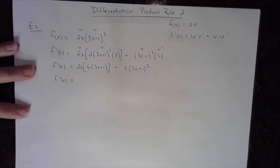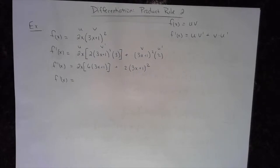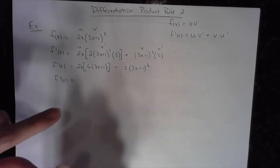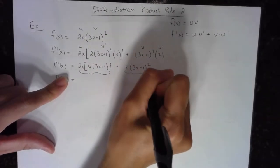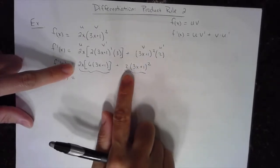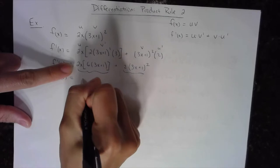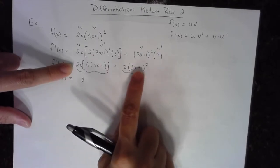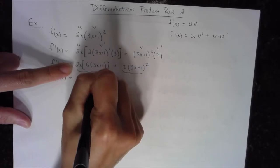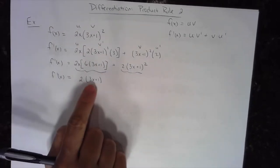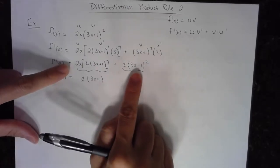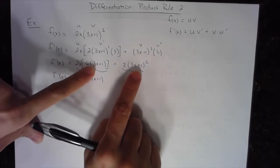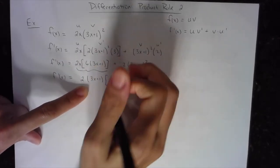Now we deal with the GCF — greatest common factor. The GCF here is a bit more difficult than basic examples. Both terms have a 2 in common, so I factor out a 2. They also both have (3x + 1) in common — one term has one of them, the other has two. I always take out the smallest exponent, so I only take out one (3x + 1). So the GCF is 2 times (3x + 1).